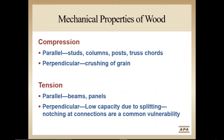In tension, wood performs well with the load applied parallel to the grain, as long as the grain is straight and there are minimum knots and other strength-reducing characteristics. This is the most demanding application for wood performance, and these applications in general require a higher quality than compression members. Note that tension failures tend to be abrupt, failing dramatically with little or no warning. Compression failures tend to be noisier and more gradual.